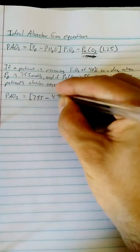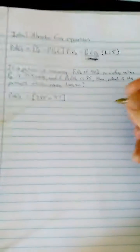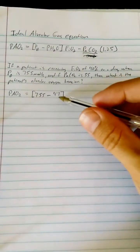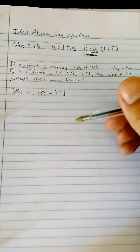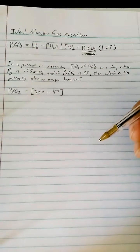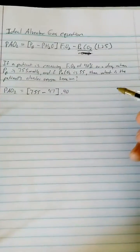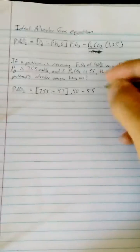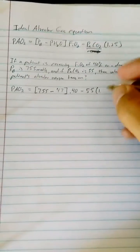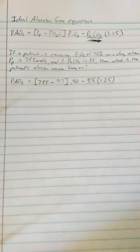So the pressure of water vapor in this equation is always 47. That's just the number they've determined, it's a constant, so you can assume that every time unless you're told otherwise. Now we want the FiO2, which is 40%, so you write that as a decimal. Minus your PaCO2, which we were given as 55, and we're going to multiply that by 1.25.